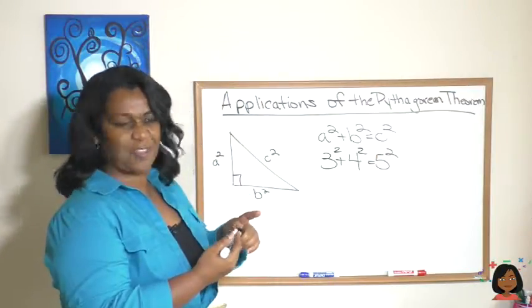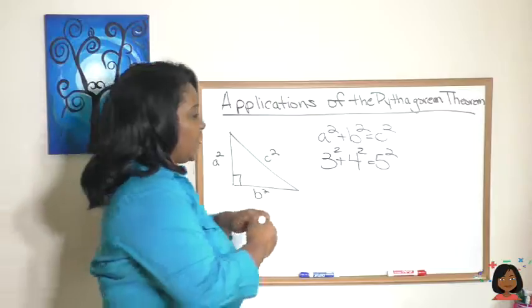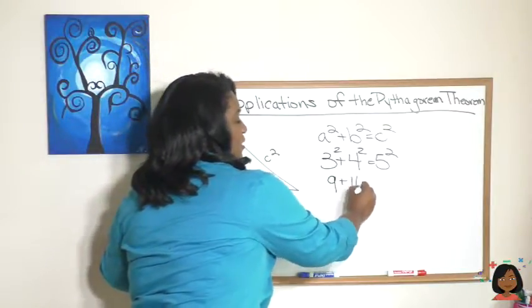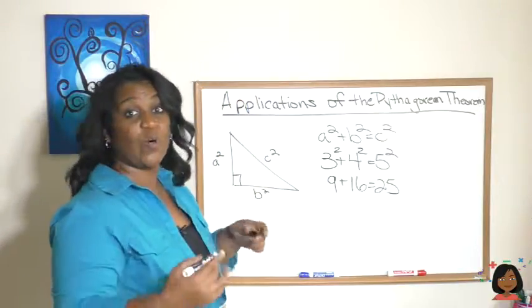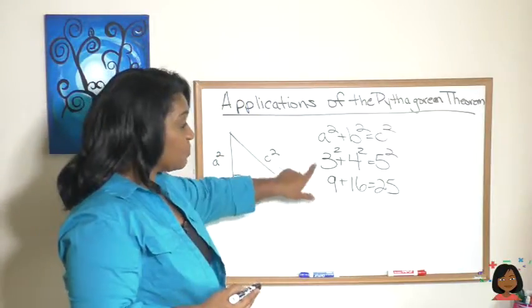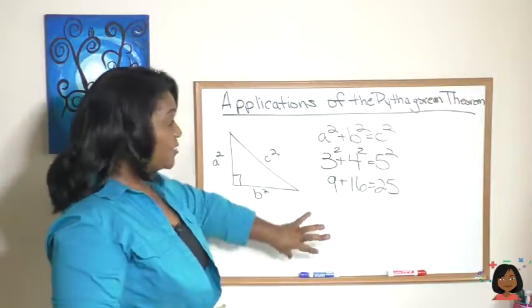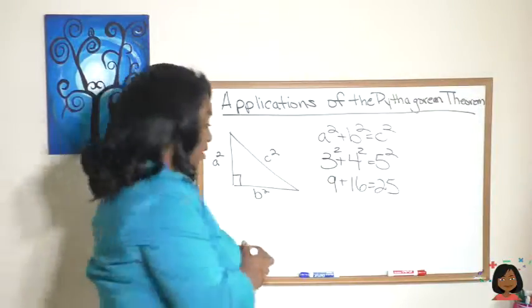And if I actually wanted to do the math on that, we'd say three squared is nine, four squared is 16, five squared is 25. Well, the good news is that multiples of three, four, and five also fit the Pythagorean Theorem.